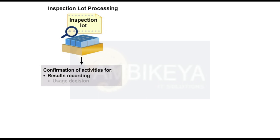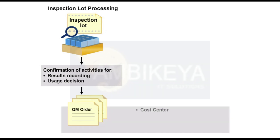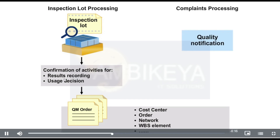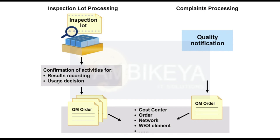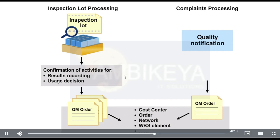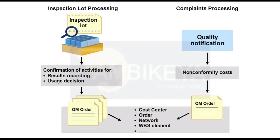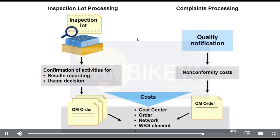The work performed and costs incurred during results recording or when the usage decision is made can be confirmed in a QM order in cost processing. The work involved in defect analysis and effect removal can be recorded in the QM order using direct activity allocation. The order type QN01 can be used for these non-conformity costs. Costs are charged to the relevant cost centers using the QM order.